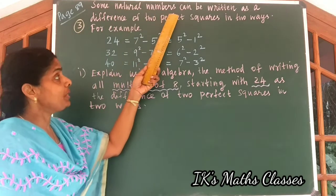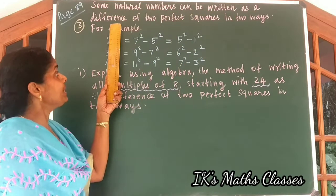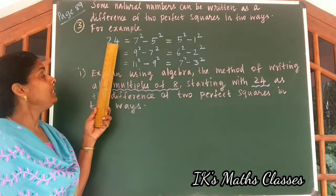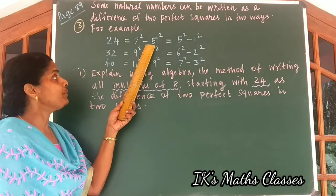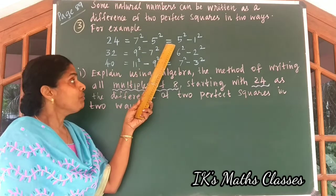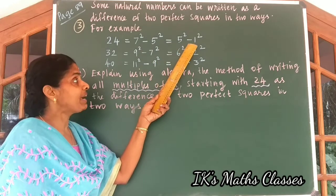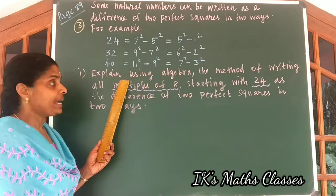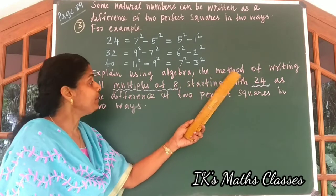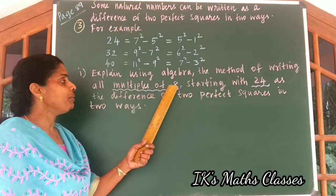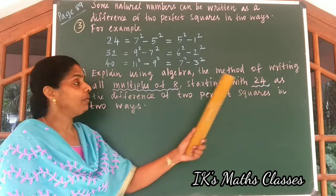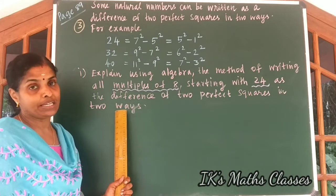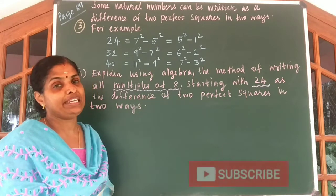Some natural numbers can be written as a difference of 2 perfect squares in 2 ways. For example, 24 is equal to 7 square minus 5 square, which is also equal to 5 square minus 1 square. Some more numbers are written. We explain using algebra the method of writing all multiples of 8 starting with 24 as the difference of 2 perfect squares in 2 ways.